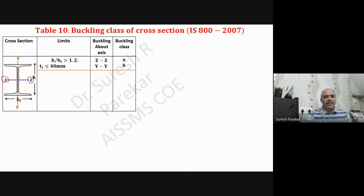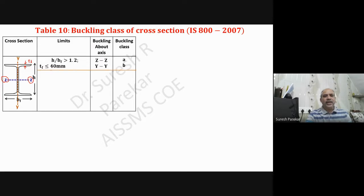The first case is h/bf — where h is the overall depth and bf is the overall width of the flange. If h/bf is greater than 1.2 and tf (thickness of flange) is less than or equal to 40 mm, then for buckling about the ZZ axis the buckling class is A, and for buckling about the YY axis the buckling class is B.